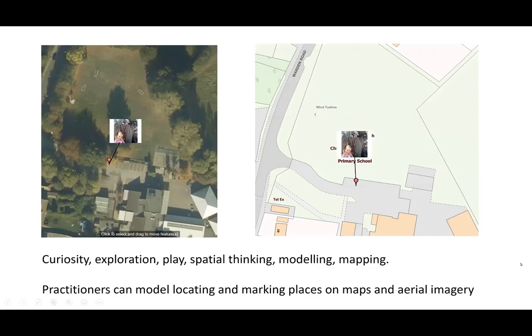We can develop this further by taking children on a walk where they hide toy figures, then add the photos to Digimaps. We use aerial imagery to talk about whereabouts in the school grounds the toys are. Children are very adept at recognising particular landmarks. We can then use the toggle tool to switch from aerial view to map view as children become more confident. So we're moving from curiosity to exploration through play, developing spatial thinking, modelling as teachers, and then mapping alongside children's own map making.